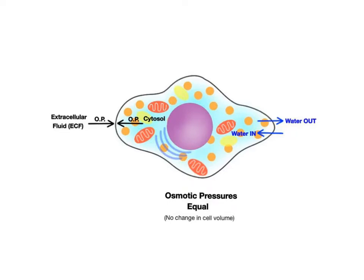In most cells, the osmotic pressure of the cytosol inside the cell is nearly equal to the osmotic pressure of the extracellular fluid outside the cell. So there is no major change to a cell's volume because the pressures are about the same on either side of the membrane.